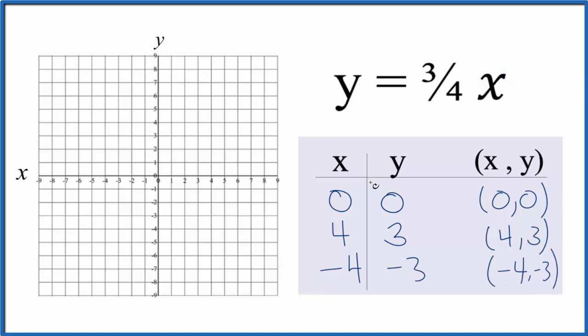So these are the points that we'll plot. We could put any numbers in for x and they'll be on that line y equals 3 over 4x. But I wanted to choose numbers that would fit on my graph and would give me whole numbers. So now we can do the graph.